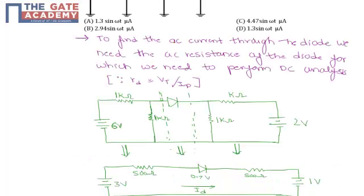To find the AC current through the diode we need the AC resistance of the diode, for which we need to perform the DC analysis. It will be Rd equals Vt divided by Id.